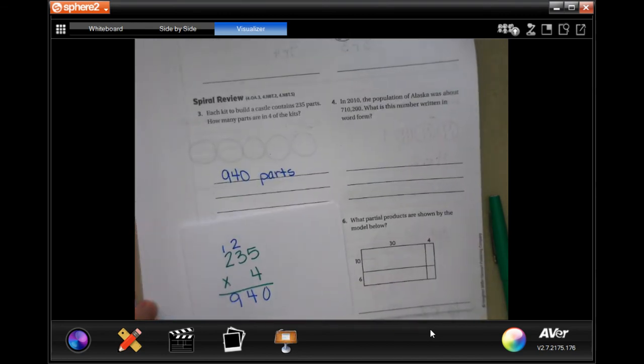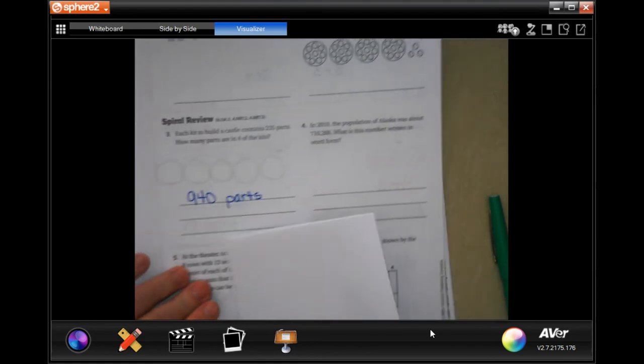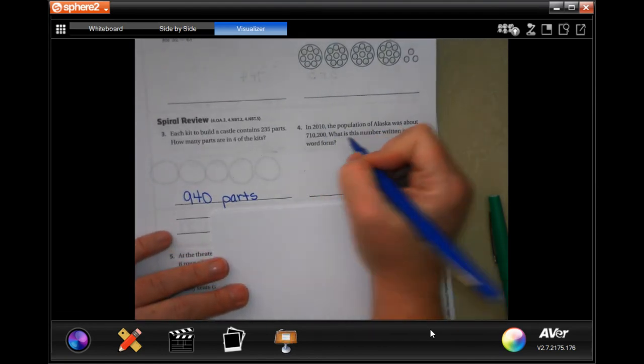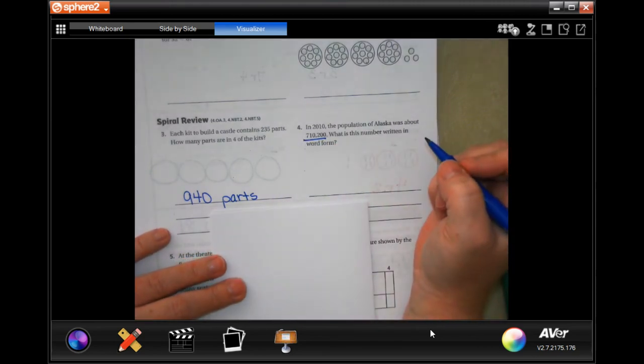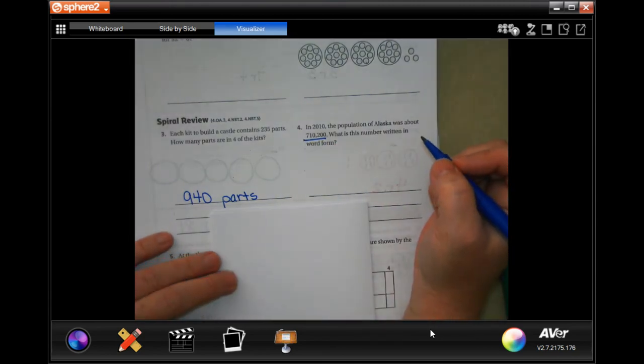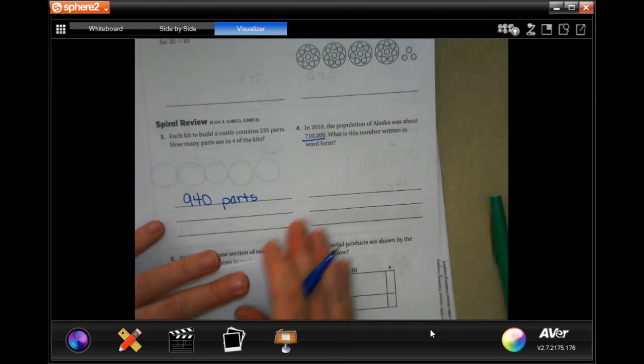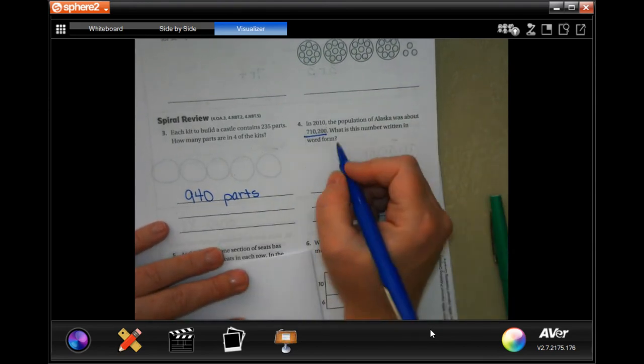Okay, write down your work guys. All right. In 2010 the population of Alaska was about seven hundred and ten thousand two hundred. What is this number written in word form? So all we're going to do is write down what we just said.